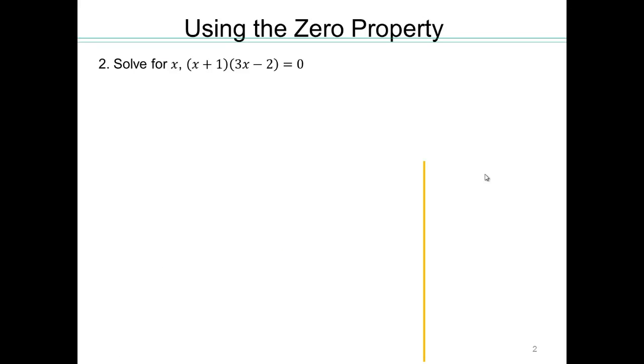Try this one on your own. Remember, product of two things is zero if and only if what? Use that property. Either the first (x + 1) is zero or (3x - 2) is zero. So set them to zero and solve.